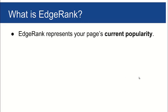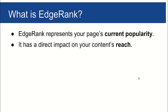EdgeRank is a pretty publicly acknowledged algorithm that Facebook has come up with, and they'll tell us how it works. Basically what it represents is your page's current popularity — think of it in those terms — or the aggregate popularity of your content at this point in time. Importantly, EdgeRank has a direct impact on your content's reach, and I'll explain how that works in a minute.